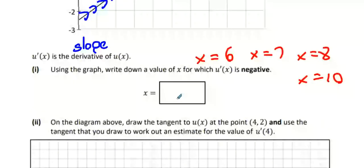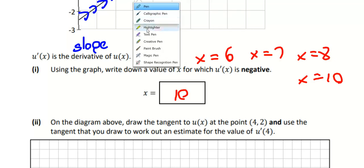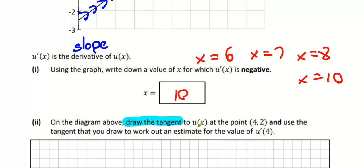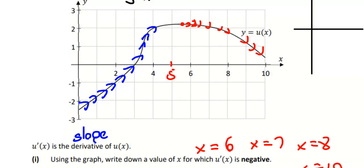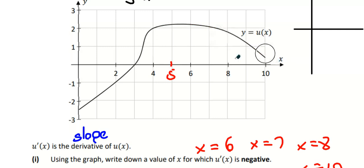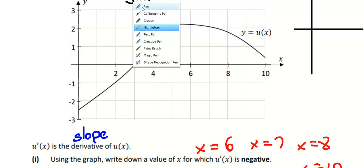We'll just do x equals ten. On the diagram, draw a tangent at the point (4, 2) and use the tangent to work out an estimate. What is a tangent again? A line that only hits the graph once. What point does it have to go through? It has to go through (4, 2) — so (4, 2) is this one here.